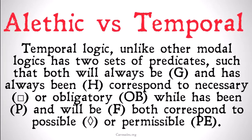Temporal logic, unlike other modal logics, has two sets of operators: 'will always be' and 'has always been' correspond to necessary or obligatory, while 'has been' and 'will be' both correspond to possible or permissible. So we have two strong tense operators, H and G, which both correspond to the box (necessary or obligatory), and two weak tense operators, P and F, which both correspond to the diamond (possible or permissible).